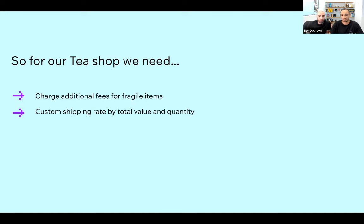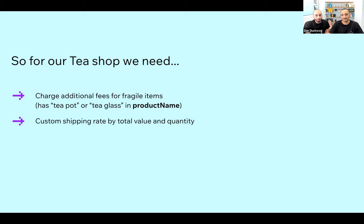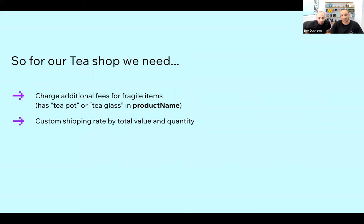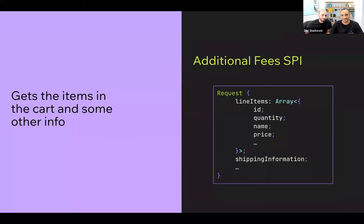The first one we're going to talk about is charging additional fees for fragile items. A fragile item is an item that has 'teapot' or 'teaglass' in its name — that's the product requirement. For this, we're going to introduce the additional fees SPI.